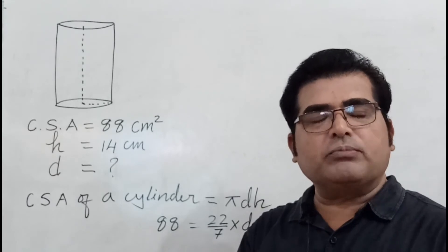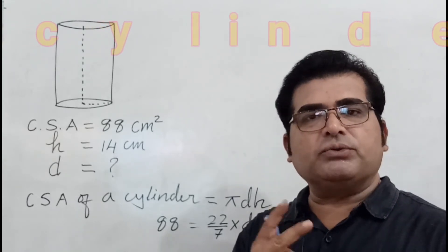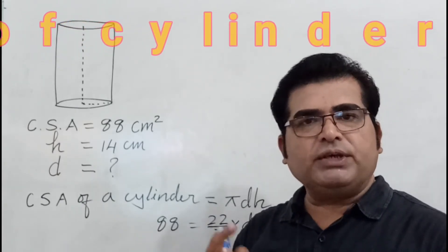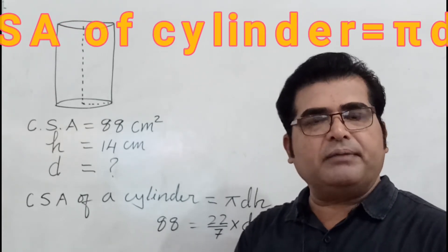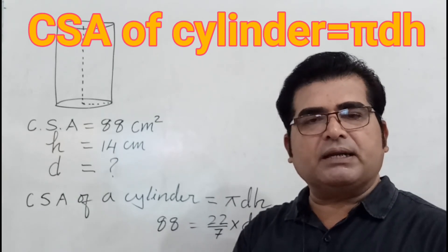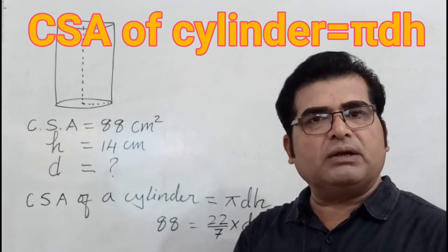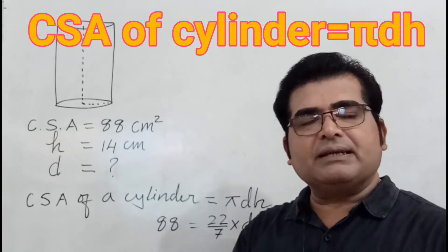The formula for curved surface area is either πdh or 2πrh. Here I'm going to use πdh because we have to find diameter. If you need to find radius, use 2πrh, then double it because diameter is twice the radius.